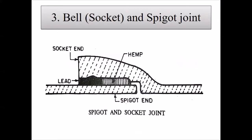In the bell and spigot joint, the plain end of the pipe is known as the spigot end and the extended end is known as the bell end. Yarn or hemp is bound around the spigot end and a rubber gasket is placed tightly over the yarn. The spigot end is then inserted into the bell end such that it is properly set in position.